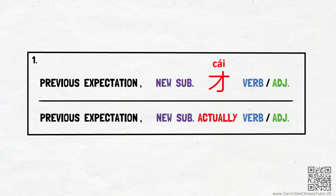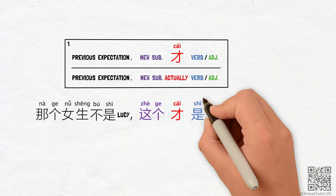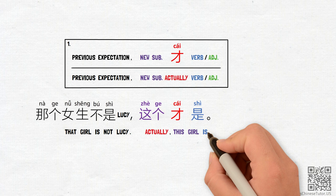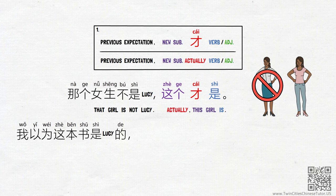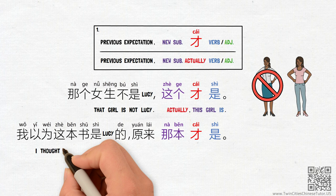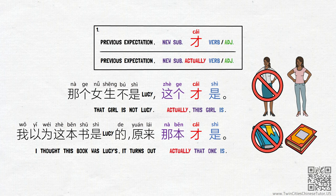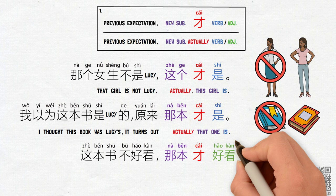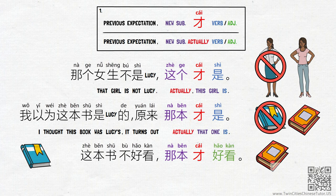For example, if I say 那个女生不是Lucy, 这个才是, I am saying, 'That girl is not Lucy. Actually, this girl is.' If I say 我以为这本书是Lucy的, 原来那本才是, I am saying, 'I thought this book was Lucy's; it turns out actually that one is.' If Lucy says 这本书不好看, 那本才好看, she is saying, 'This book is not fun to read. Instead, that one is.'